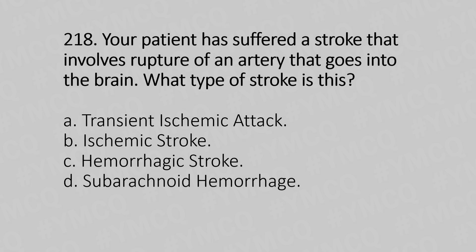Question 218: Your patient has suffered a stroke that involves rupture of an artery going into the brain. What type of stroke is this? Option A: Transient ischemic attack. Option B: Ischemic stroke. Option C: Hemorrhagic stroke. Option D: Subarachnoid hemorrhage. The answer is Option C: Hemorrhagic stroke.